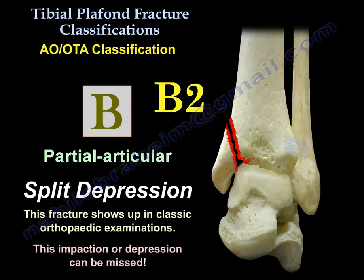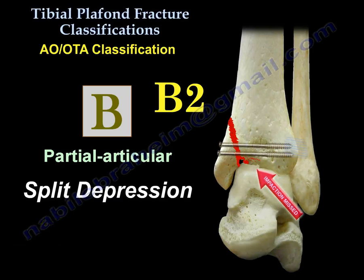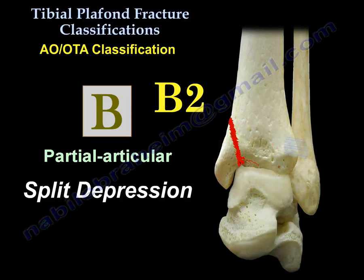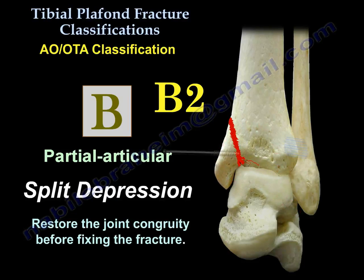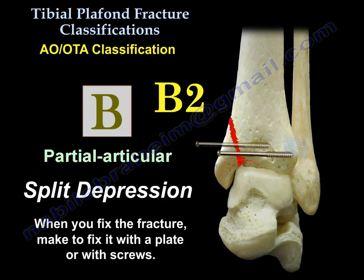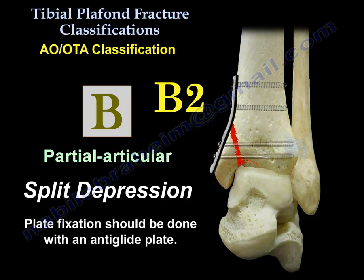That fracture appears in classic orthopedic examinations because you can miss the depression or impaction. After fixation, you probably need to revise the fixation, elevate that impaction or depression, and restore joint congruity before fixing the fracture. When you fix it, use a plate or screws — the screws must be parallel to the joint to compress the fracture, and the plate will be an anti-glide plate.